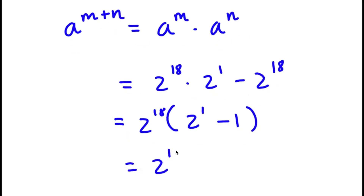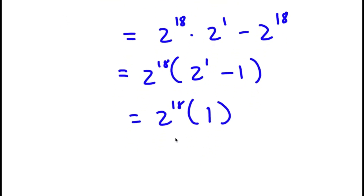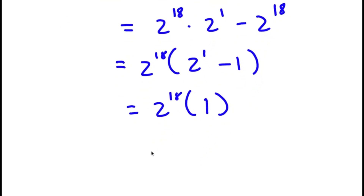This is the same thing as 2 to the power of 18 times — 2 to the power of 1 is 2, and 2 minus 1 is 1. So 2 to the power of 18 times 1, which is simply equal to 2 to the power of 18.